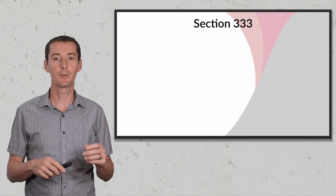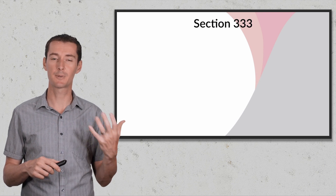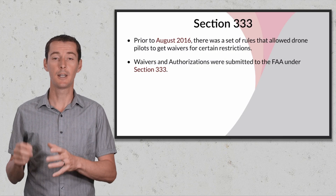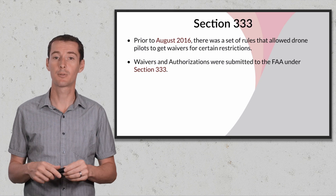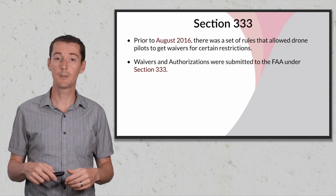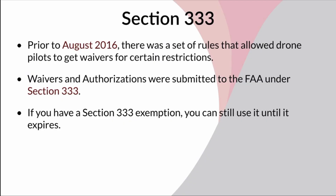The next part of the alphabet soup is Section 333, which is probably not something you have to worry too much about. Prior to August 2016, the FAA had come up with a set of rules, and if pilots wanted to get around certain restrictions they had to get a special approval — a waiver. The FAA created these waivers and authorizations submitted and approved under Section 333. Some of those waivers may still be out there; if you have a Section 333 exemption you can still use it until it expires.